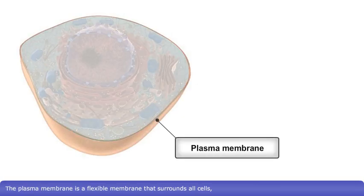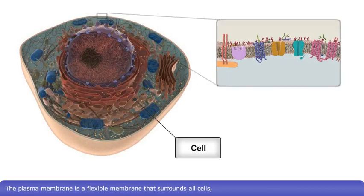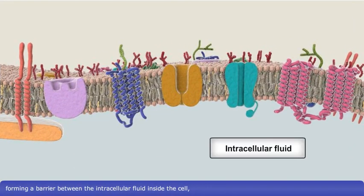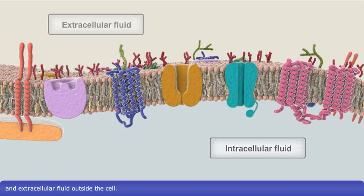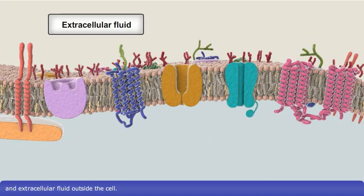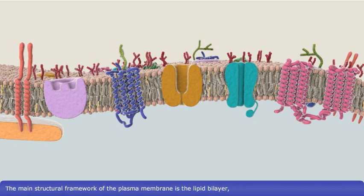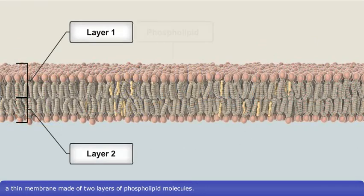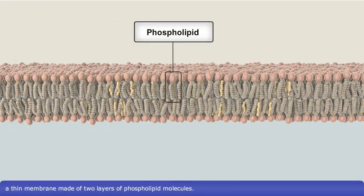The plasma membrane is a flexible membrane that surrounds all cells, forming a barrier between the intracellular fluid inside the cell and the extracellular fluid outside the cell. The main structural framework of the plasma membrane is the lipid bilayer, a thin membrane made of two layers of phospholipid molecules.